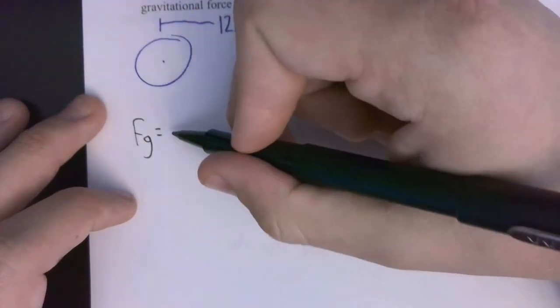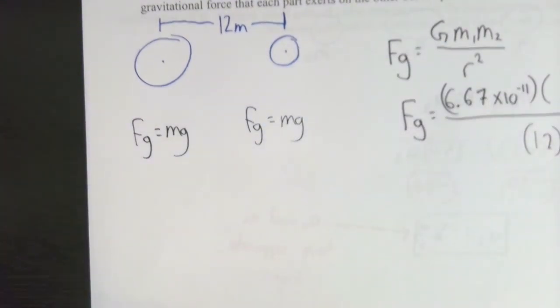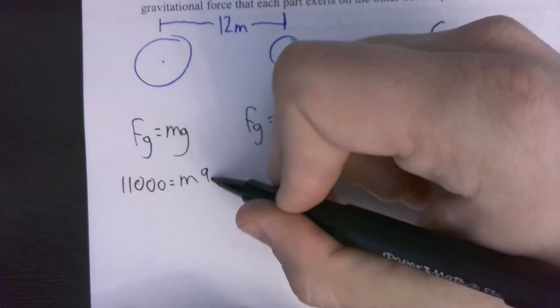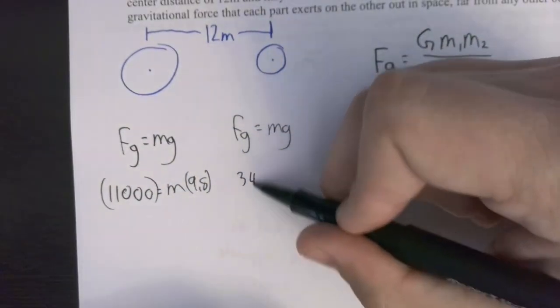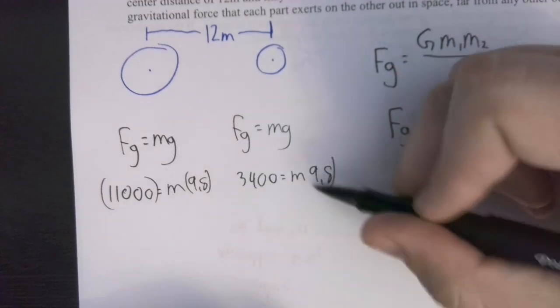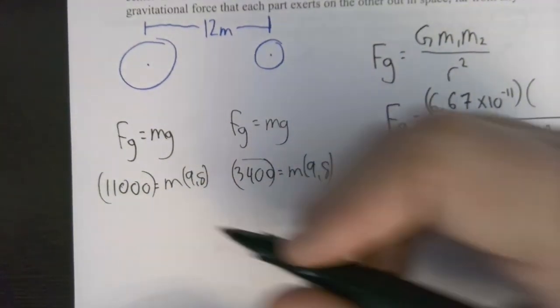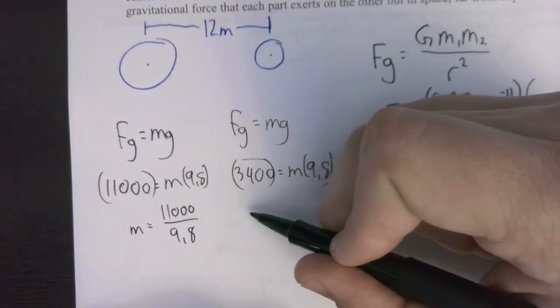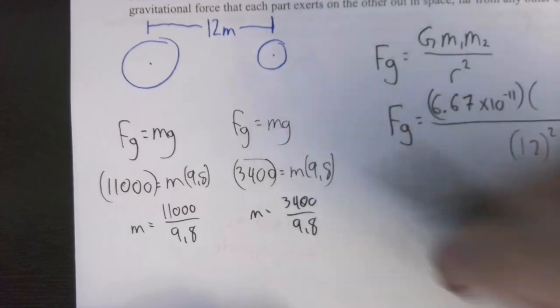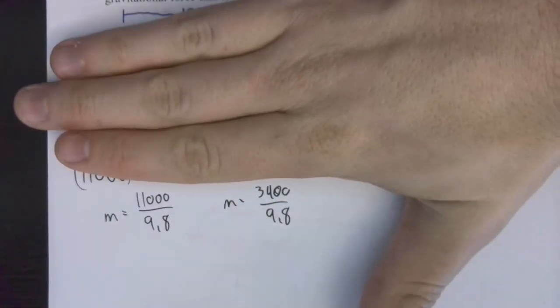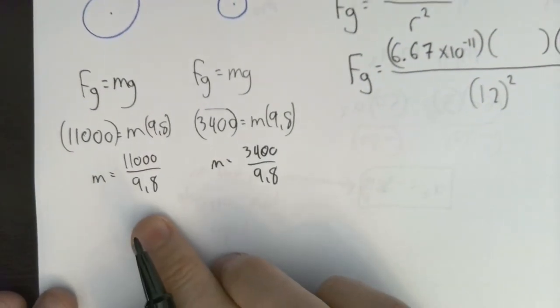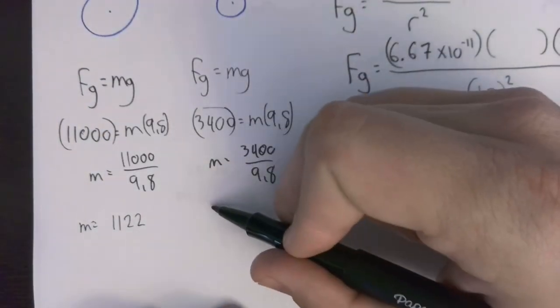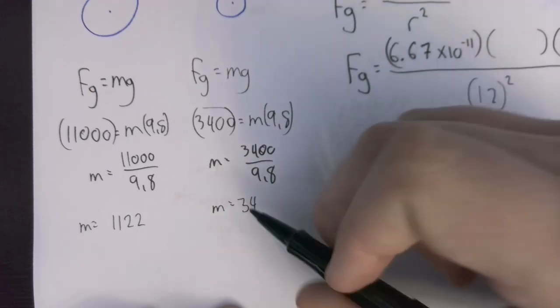So it's kind of rapid fire. FG equals MG. FG equals MG. You could kind of just divide it in your head to like, well, not in your head, but 11,000 equals M times 9.8. So you don't really need to write all this. What I'm saying is you could just write 11,000 over 9.8. That's M. And this one is 3,400 over 9.8. So all that, I mean, you could kind of skip all that if you're strong with math. So when you divide those out, you'll get 1122, and you'll get 346.9.